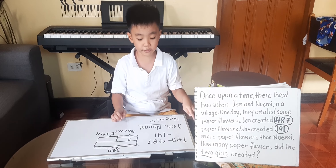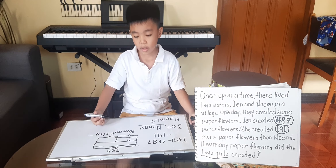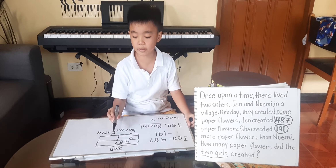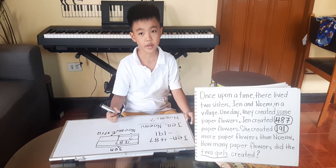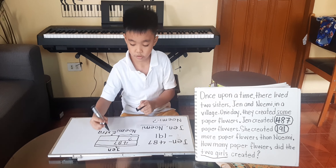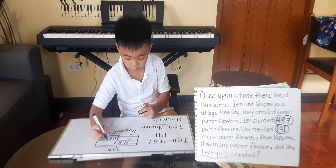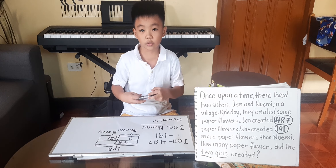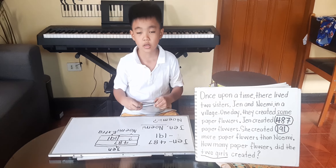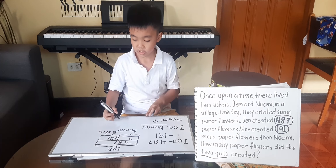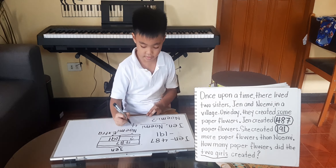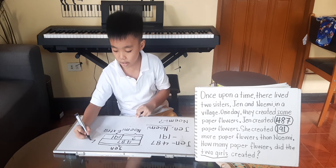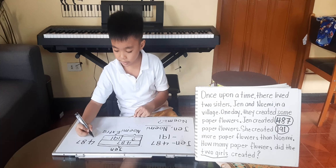Since Chen created 487 paper flowers, I will label her bar with 487. And this small space right here represents the 191 that Chen created more than Noimi. So, I will write 191.